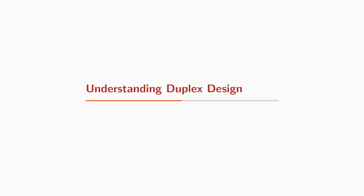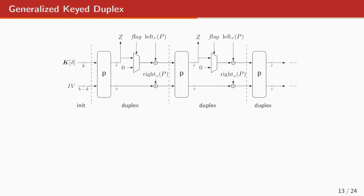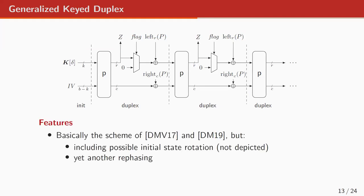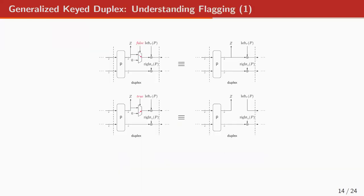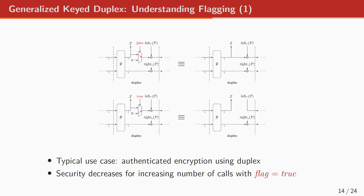I will describe the generalized duplex we take — same as before but with another re-phasing — which turned out to be the best way for certain applications. One thing I want to show is the application of the flag. The flag is either false or true. If false, you take the previous value and feed it forward, adding the outer part. If true, you take zero and overwrite the outer part. A typical use case of this is authenticated encryption, and it turns out security actually decreases for evaluations with flag true.